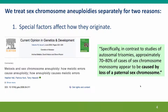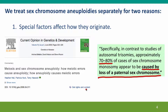One reason we treat sex chromosome aneuploidies separately from the others is because they originate in a different way. This was very clearly illustrated by a recent paper, whose authors concluded that 70–80% of sex chromosome monosomies appear to be caused by loss of a paternal sex chromosome, not a maternal sex chromosome — so these are errors in the father's germline, not the mother's.